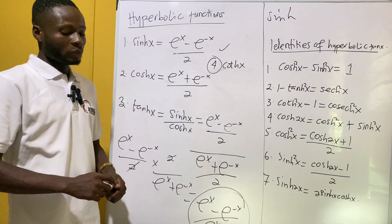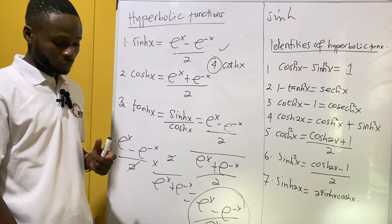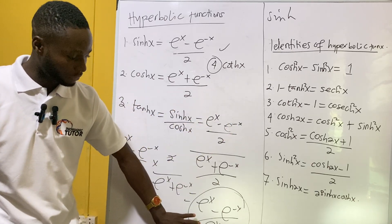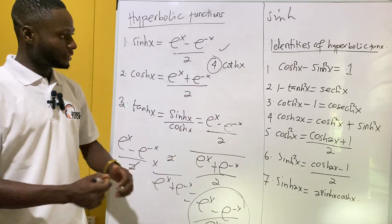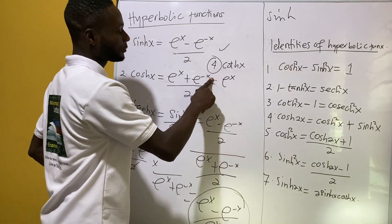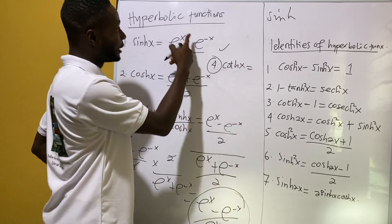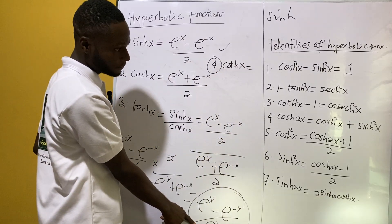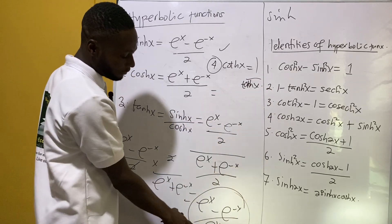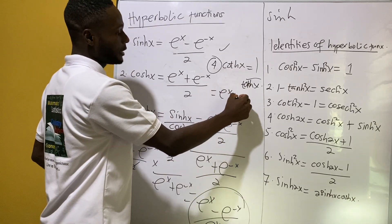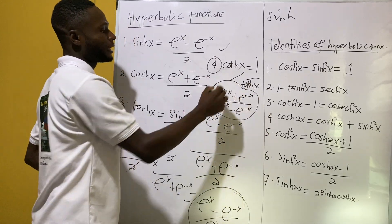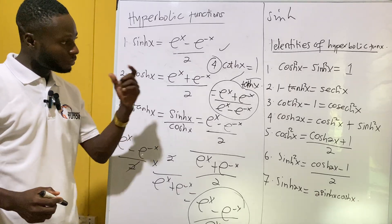Let's look at the hyperbolic function for coth. We know that coth is one over tanh, so whatever we have for tanh we take its reciprocal. That turns the function upside down, and we get e^x plus e^(-x) all over e^x minus e^(-x), and this is the hyperbolic function for coth.